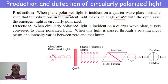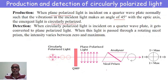Then we get circularly polarized light. In order to detect whether light is circularly polarized or not, we pass this circularly polarized light through a quarter wave plate. Once circularly polarized light is made to pass through the second quarter wave plate, we get plane polarized light back. When this plane polarized light is made to pass through a rotating Nicol prism — the second Nicol prism, which is rotating — and if the intensity varies between zero and maximum twice for one complete rotation of the analyzer, then the light is said to be circularly polarized.